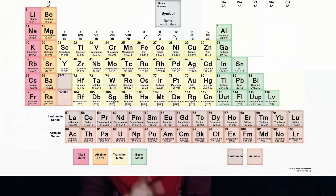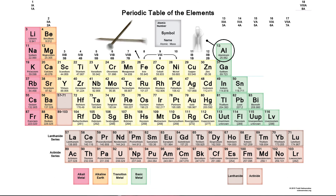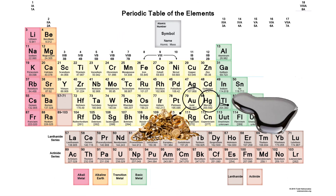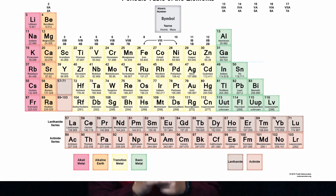Metals are typically found on the left side of the periodic table. They are often conductive to electricity, malleable, ductile, shiny and sometimes magnetic. Aluminium, iron, copper, gold and mercury are metals and exist as atoms.